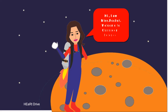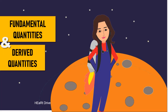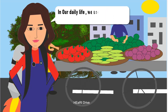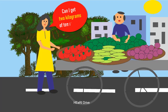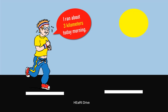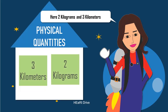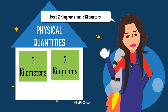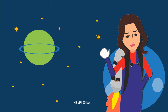Hi, I'm Miss Rocket. Welcome to Classroom Science: Fundamental and Derived Quantities. In our daily life we use measurements many times. For example, 'Can I get two kilograms of tomatoes?' or 'I ran about three kilometers this morning.' Here, two kilograms and three kilometers are physical quantities.